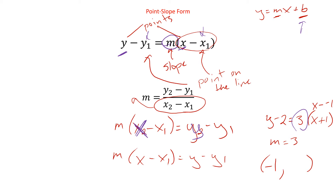This x plus 1 could be written as x minus negative 1. So that means x1 is negative 1. And for y, we have y minus 2, so y1 is 2. It goes through the point negative 1 comma 2. We need to make sure we switch the signs on what it shows in the equation, because the formula has that negative in it. That's one of those places people tend to slip up.